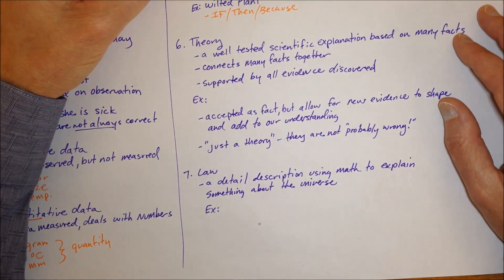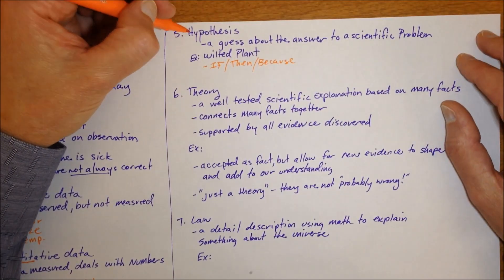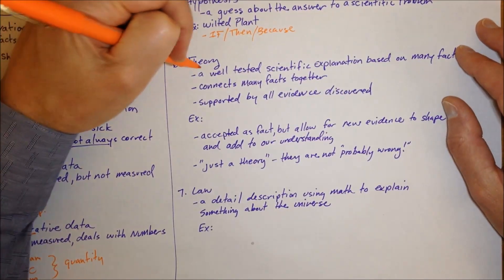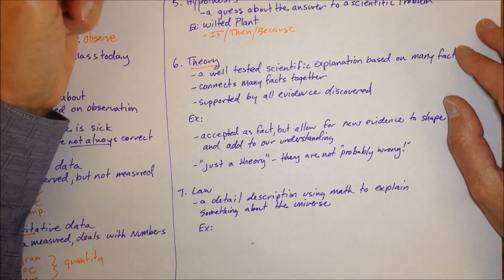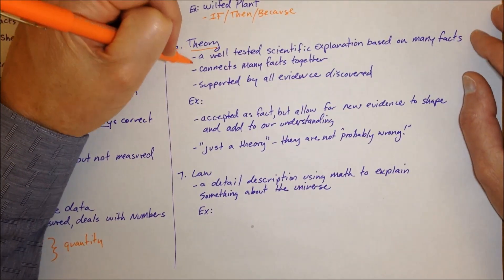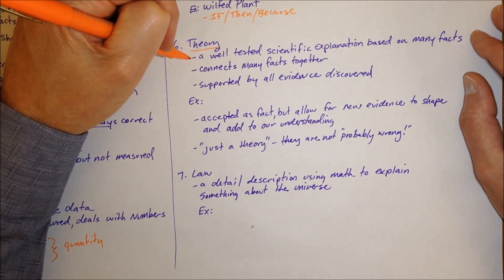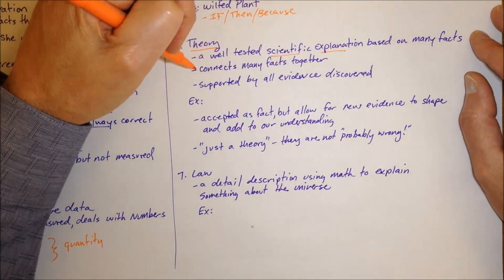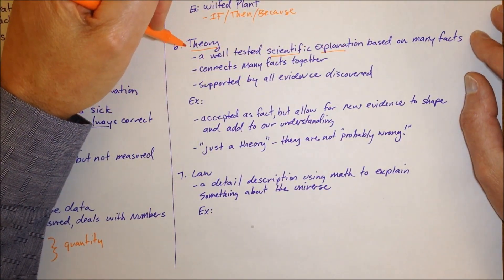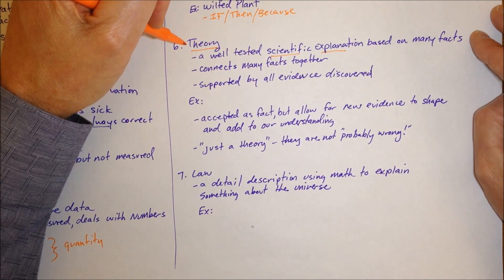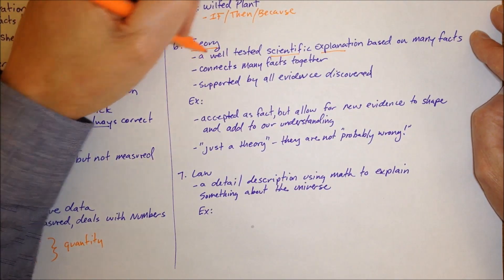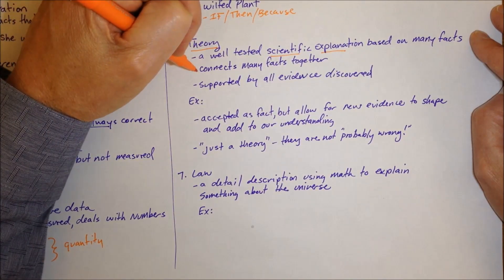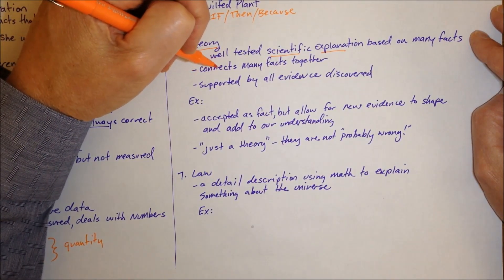In science, hypotheses that have been tested and generally cover a broad range of information can kind of graduate sometimes into what we call a theory. Theories are kind of complex, lots of information about what it is. A theory is a well-tested scientific explanation based on many facts. So saying, you know, you have a theory that your cell phone you left in your locker is not a theory. It's not a well-tested scientific explanation based on facts that you've accumulated.